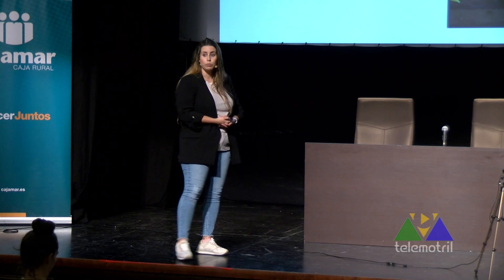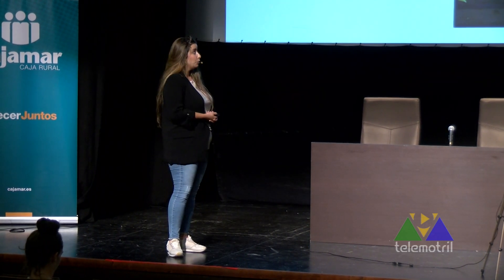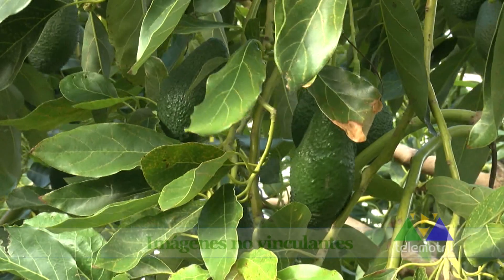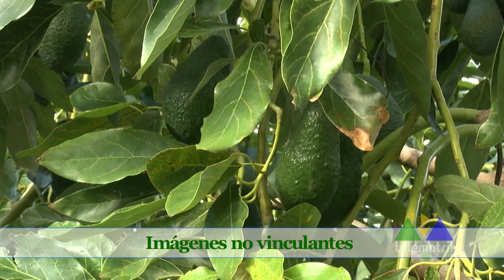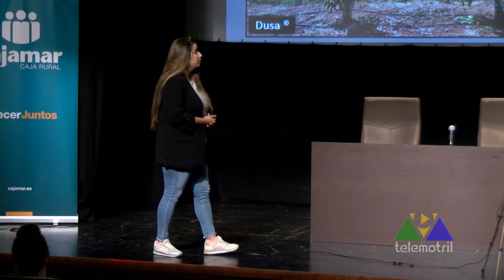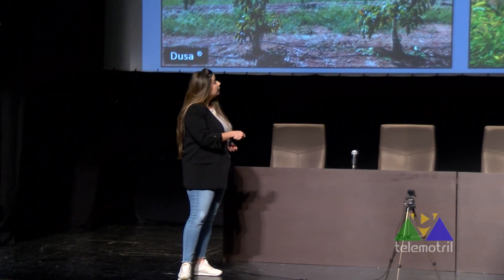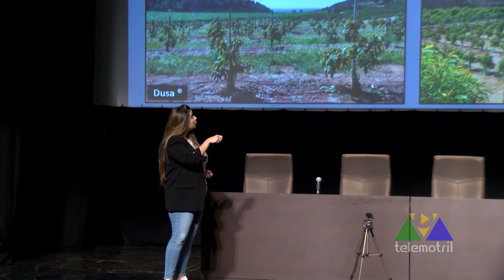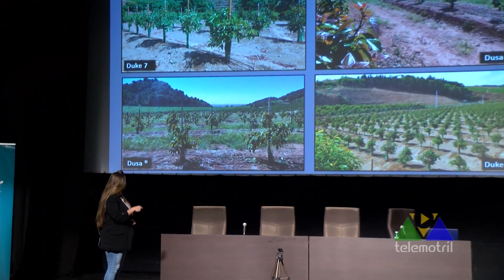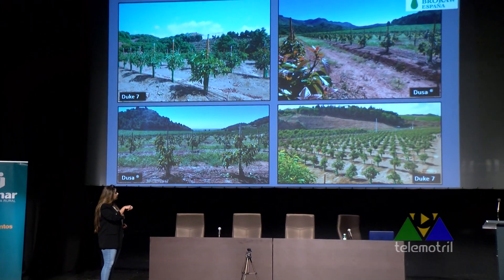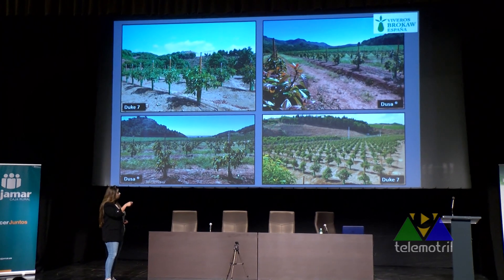Con un buen manejo de poda las fincas están siendo muy productivas y no se están emboscando. Ejemplos de plantaciones clonales: estas son plantaciones recientes que se están poniendo en la zona de Valencia, de Dusa y de Duque 7. Se aprecia la homogeneidad desde el principio de la finca.